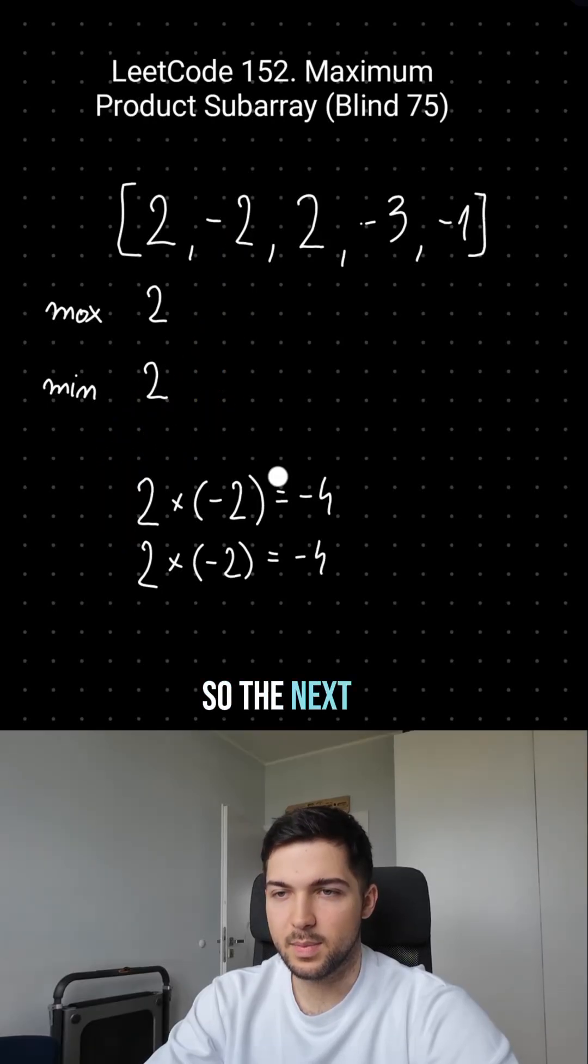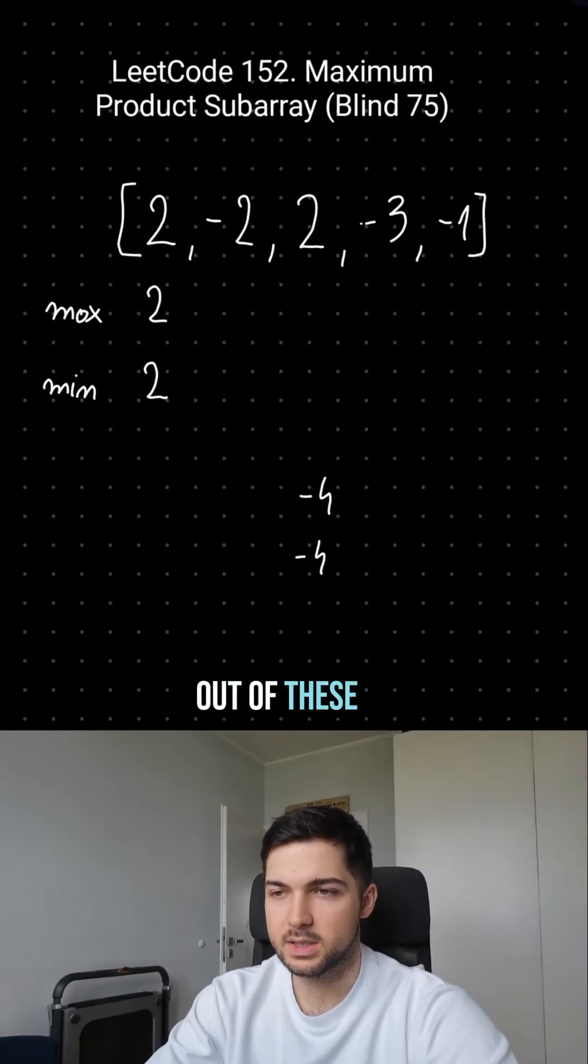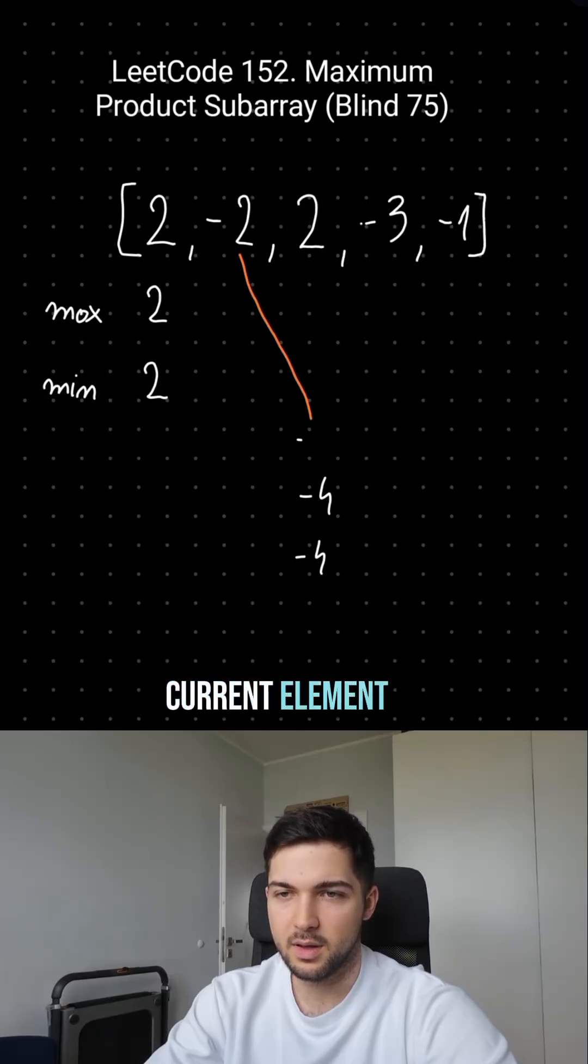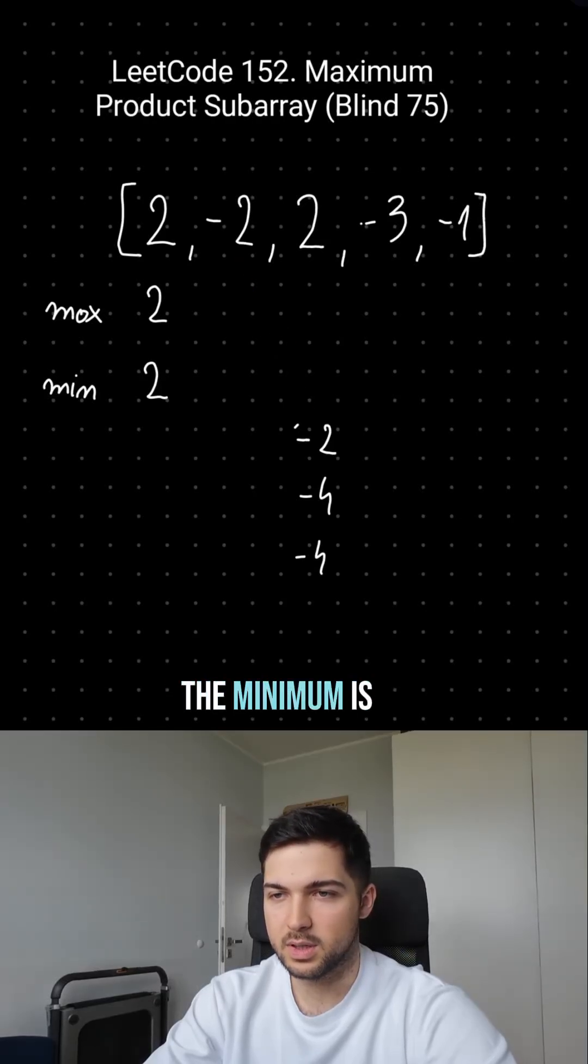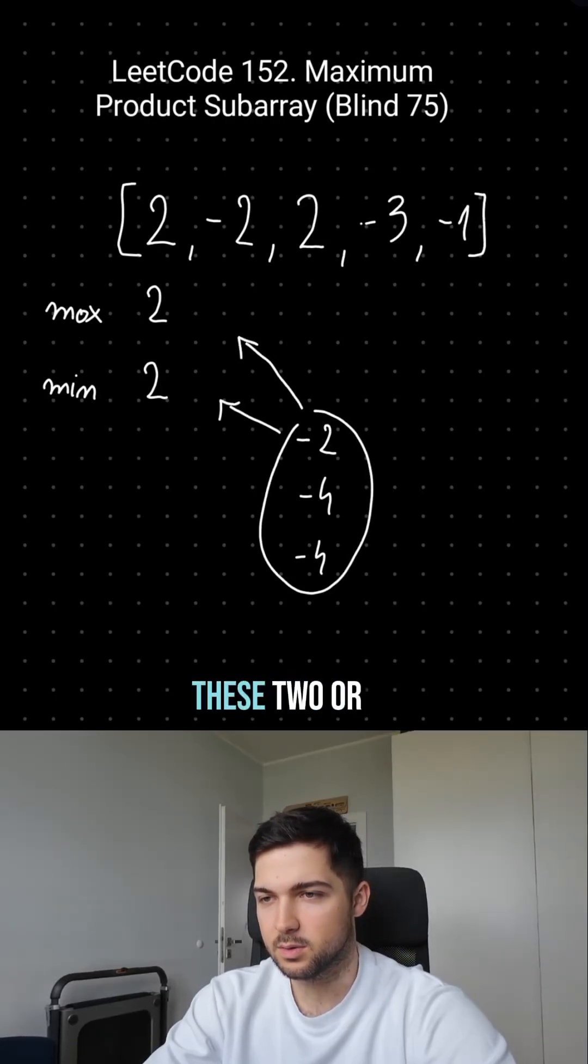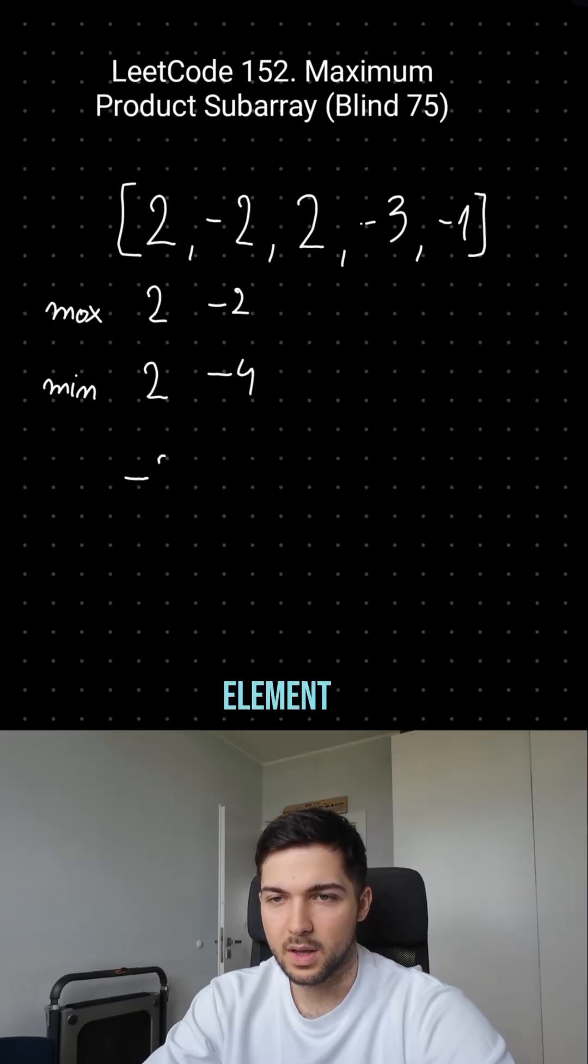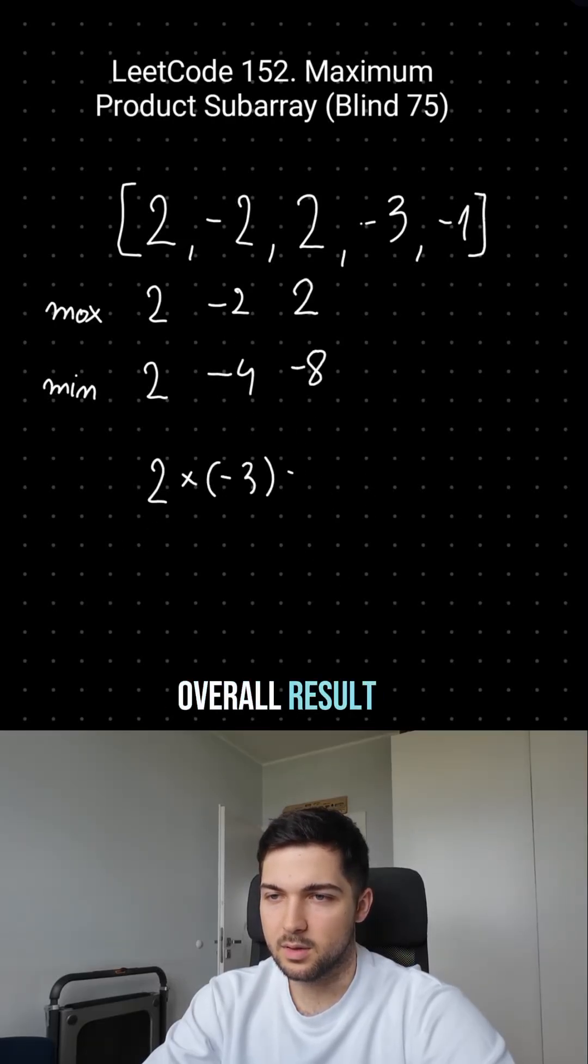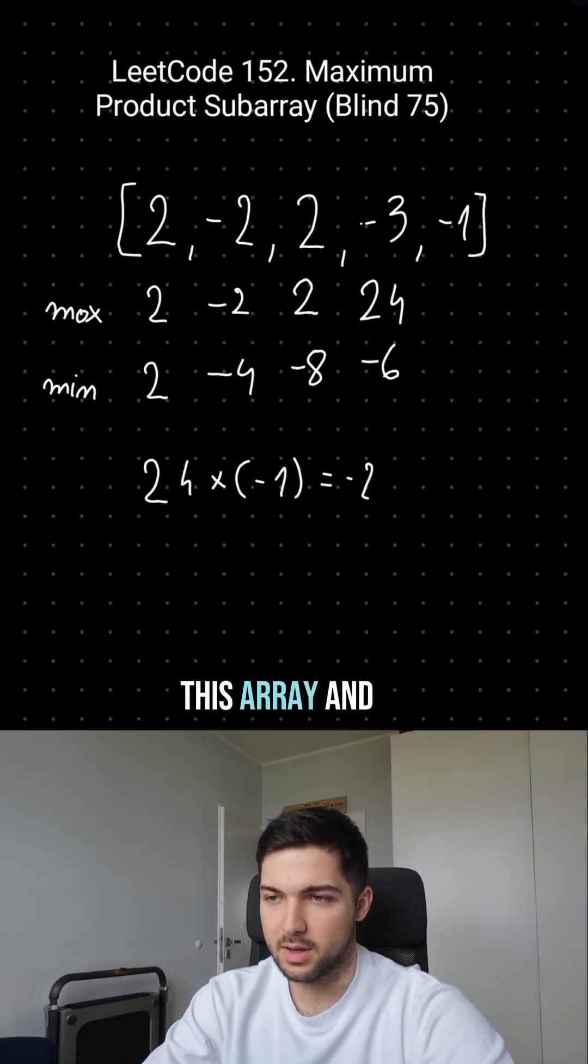So the next maximum is max out of these two candidates or just the current element. Similarly, the minimum is minimum out of these two or just the current element. To get the overall result, we just return the max of this array, and that's it.